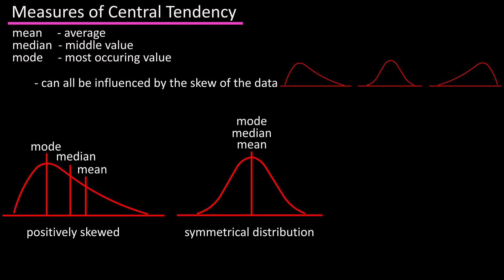In a positively skewed distribution, the higher values in the data set will pull the mean upwards. The median will be less than the mean and more towards the center of the graph, and the mode will be less than the median, more towards the peak of the graph.